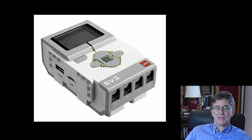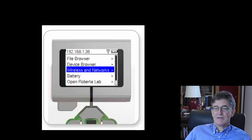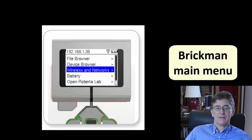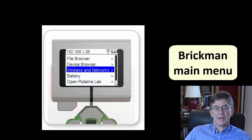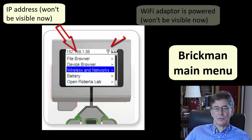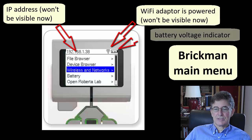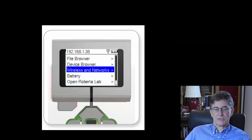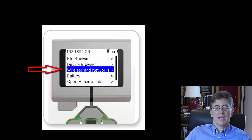When the boot process is finished — which takes a couple of minutes — the EV3's LED lights will glow green and the EV3dev interface called Brickman will be displayed on the EV3 display. At the top of the Brickman interface is a header line where the EV3's IP address will be displayed, as well as indicators for Wi-Fi or Bluetooth connections and battery voltage. Under that are the main sections: a file browser, device browser, wireless and networks, battery, open Roberta Lab, and about.